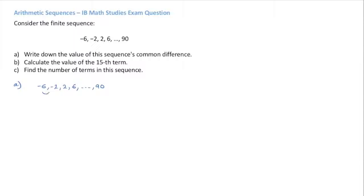Well, it doesn't take us too long to realize that, to get from one term to the next, we're consistently adding 4. So, in other words, the common difference is 4, and we write this D equals 4.